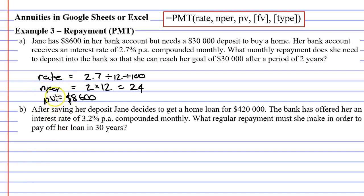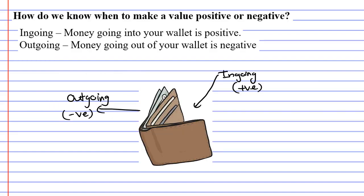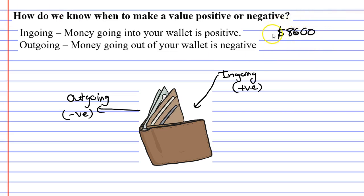Now, we need to look at our present value and think to ourselves, is this a positive amount or is this going to be a negative amount? To figure this out, we need to talk about in-goings and out-goings, and I like to use the picture of the wallet. The amount we have is $8,600, and she's basically put this into some sort of an investment account.